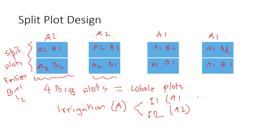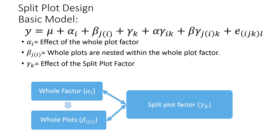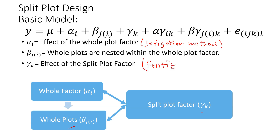The whole plot factor is nested under the big plots. If we write the model, the whole plot factor alpha is nested under the whole plots, and then the split plot factor gamma is the fertilizer type. So alpha represents the irrigation method and gamma represents the fertilizer.